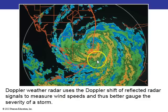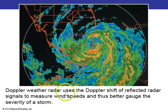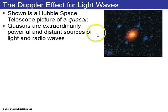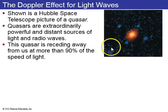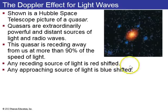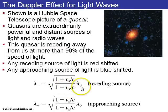Doppler weather radar uses electromagnetic waves bouncing off raindrops. When the wind is blowing, this shifts the frequency of the reflected electromagnetic radio waves slightly so that you can measure wind speeds and gauge how severe a storm is. A quasar emitting light and rushing away from us at more than 90 percent the speed of light is an example of red shift — any receding source of light is red shifted, and if it's approaching it'll be blue shifted. The equations for the Doppler effect for light waves involve the square root of (1 plus v sub s over c) divided by (1 minus v sub s over c) times the rest wavelength.